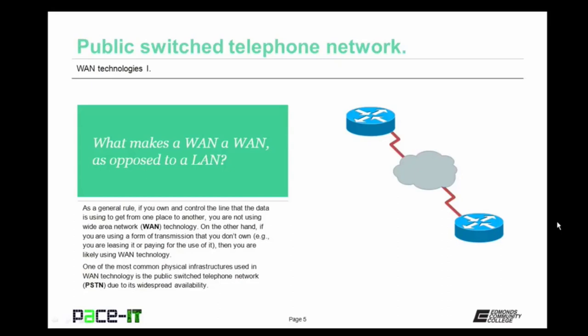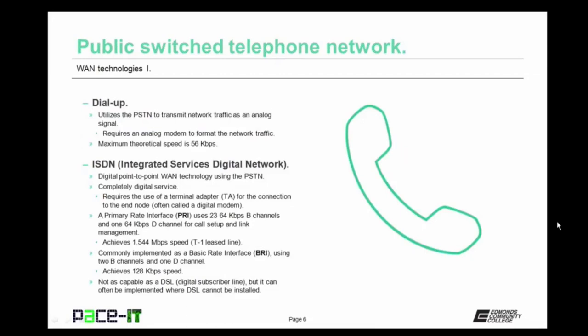Just about everybody has a telephone line run to their house or building. An older technology, but still somewhat valid today for WAN, is dial-up. Dial-up utilizes the PSTN to transmit network traffic as an analog signal. Dial-up does require an analog modem to format the network traffic correctly so it can be transmitted. Your maximum theoretical speed on dial-up is 56 kilobits per second — not very fast.